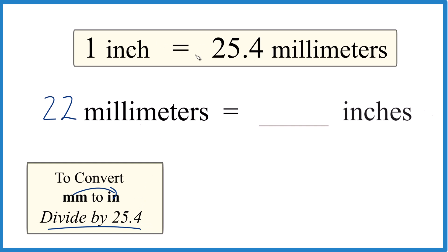That's because one inch equals 25.4 millimeters. That's our conversion factor. So we take 22 millimeters here and divide that by 25.4, which is 25.4 millimeters per inch.